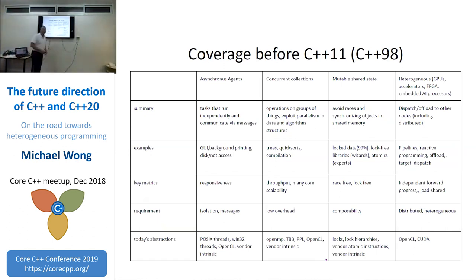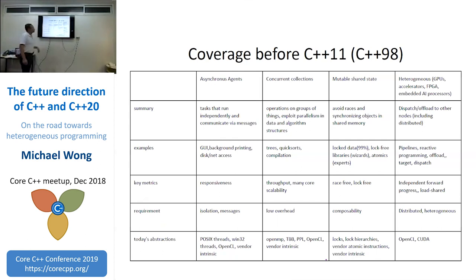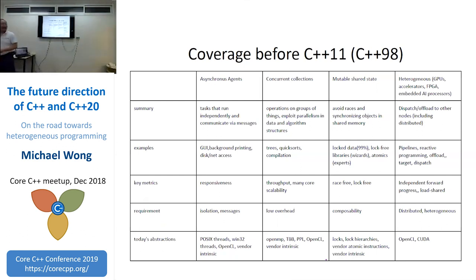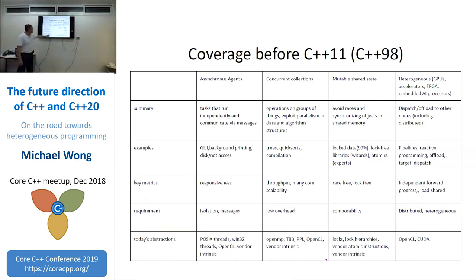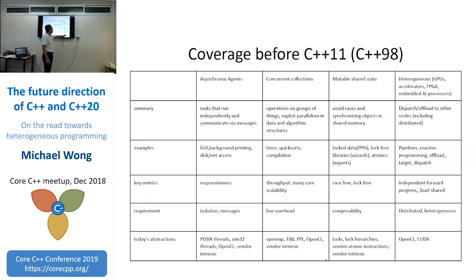I added a fourth column: heterogeneous and accelerated computing — offloading to GPUs, embedded AI processors, with key metrics being independent forward progress and load balancing between CPU and GPU. Before C++11, none of this capability was in C++. For asynchronous agents you'd use pthreads. For concurrent collections, OpenMP, Thread Building Blocks, or OpenCL. For mutable shared state, you had to roll your own locks. For heterogeneous, you had to use CUDA or OpenCL.